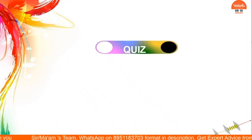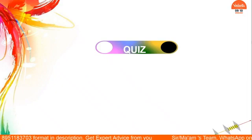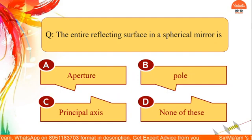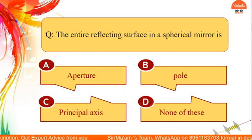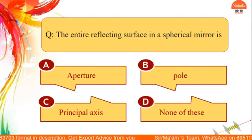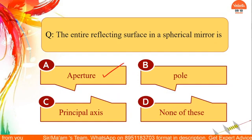Let's go on to the quiz questions. First question: what is the entire reflecting surface in a spherical mirror called? Is it the aperture, the pole, the principal axis, or none of these? The answer is aperture — aperture is the entire reflecting surface of a mirror.